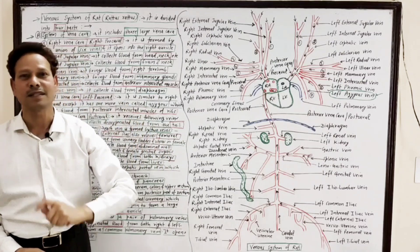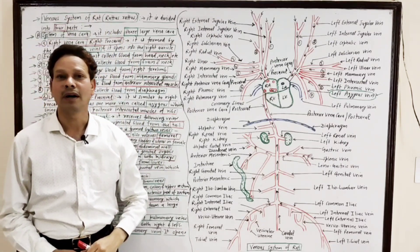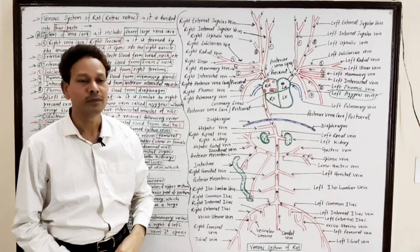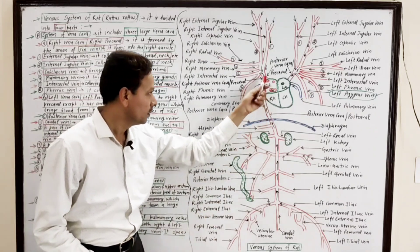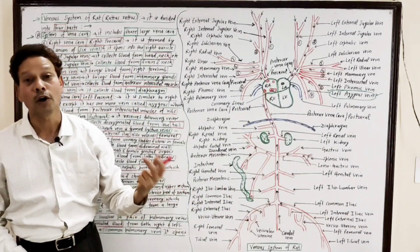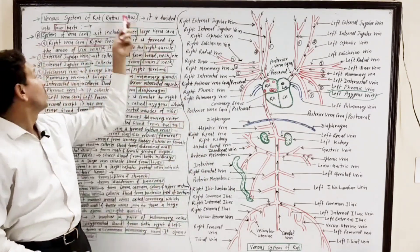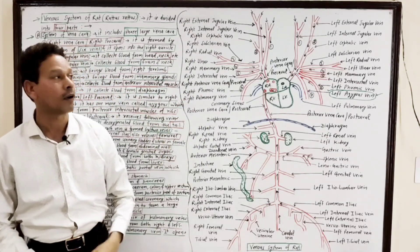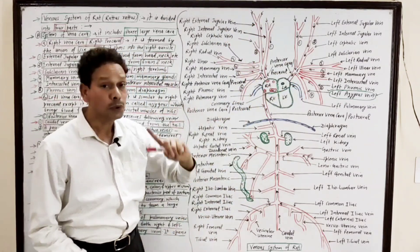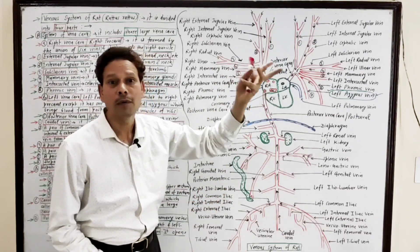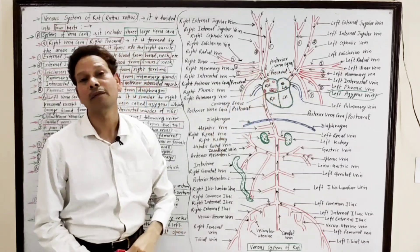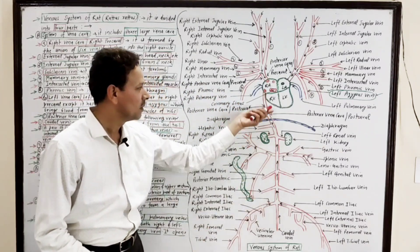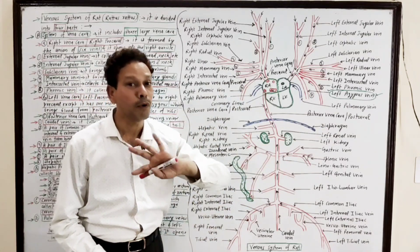First of all I will discuss the system of venous cava. In this system of venous cava there are three large vessels: the right precaval, the left precaval, and the posterior venous cava or postcaval. These three large blood vessels collect deoxygenated blood — the two precavals from anterior parts of the body, and the postcaval from posterior parts.